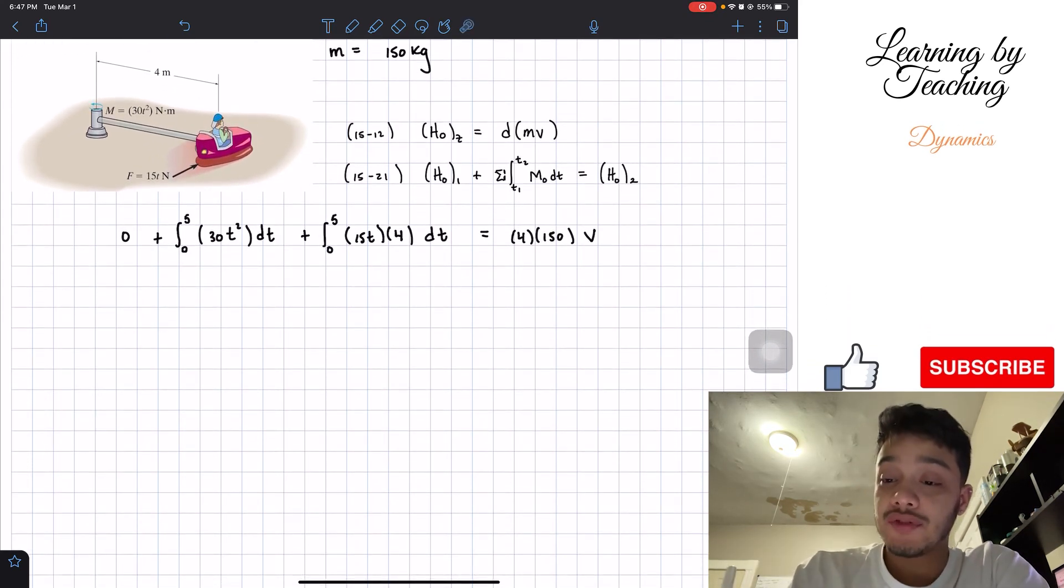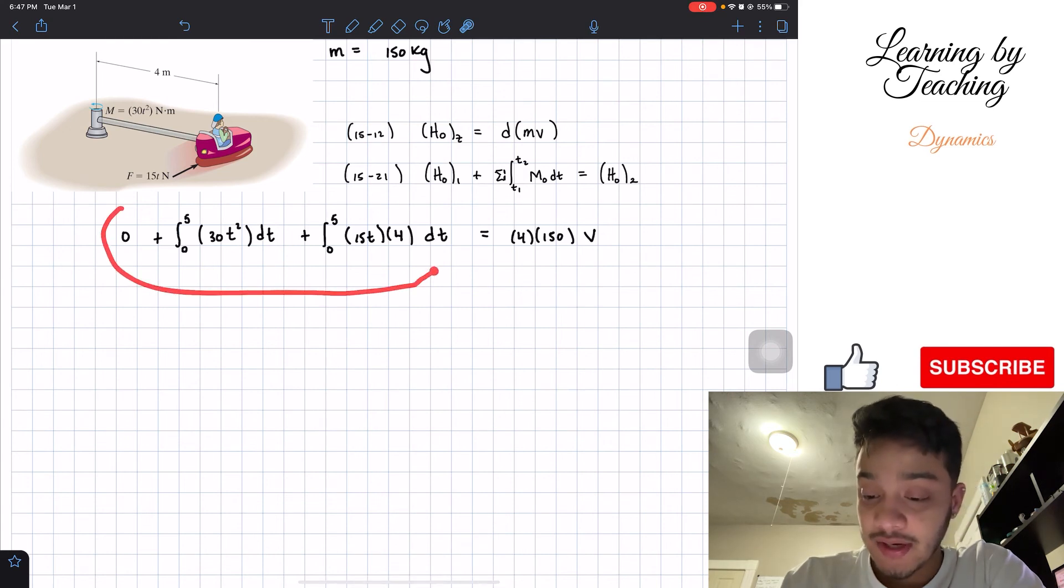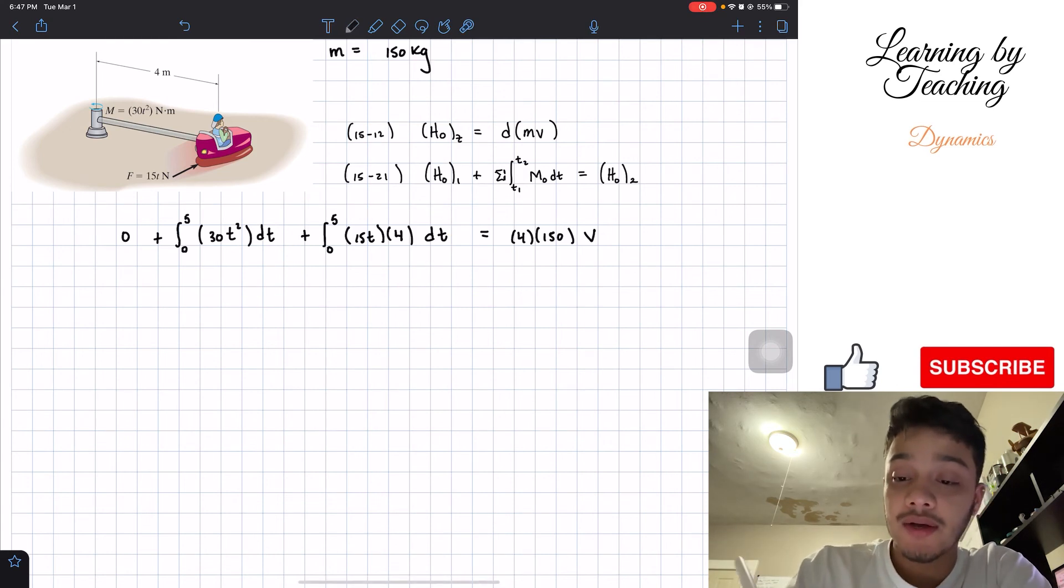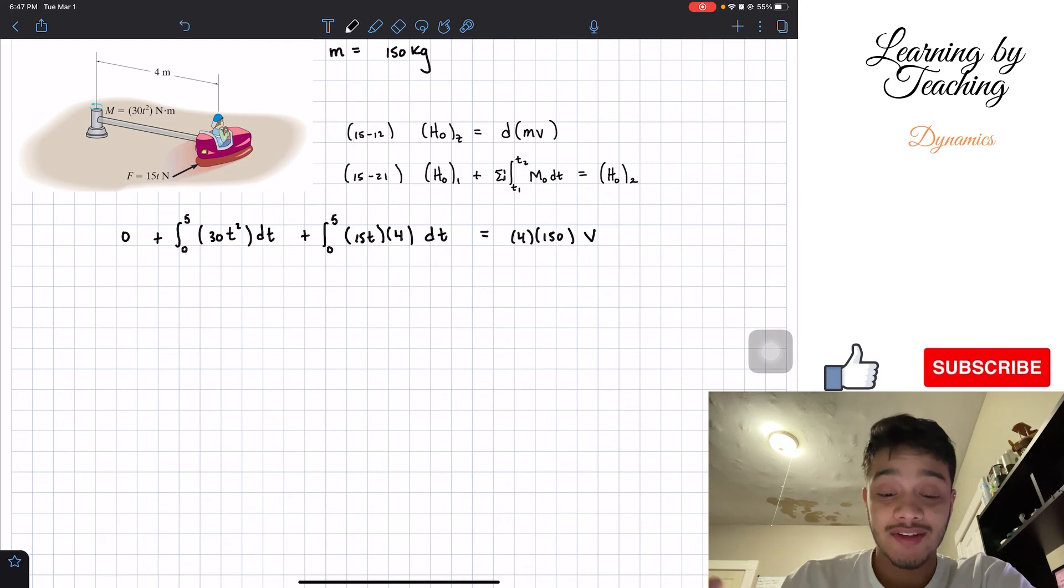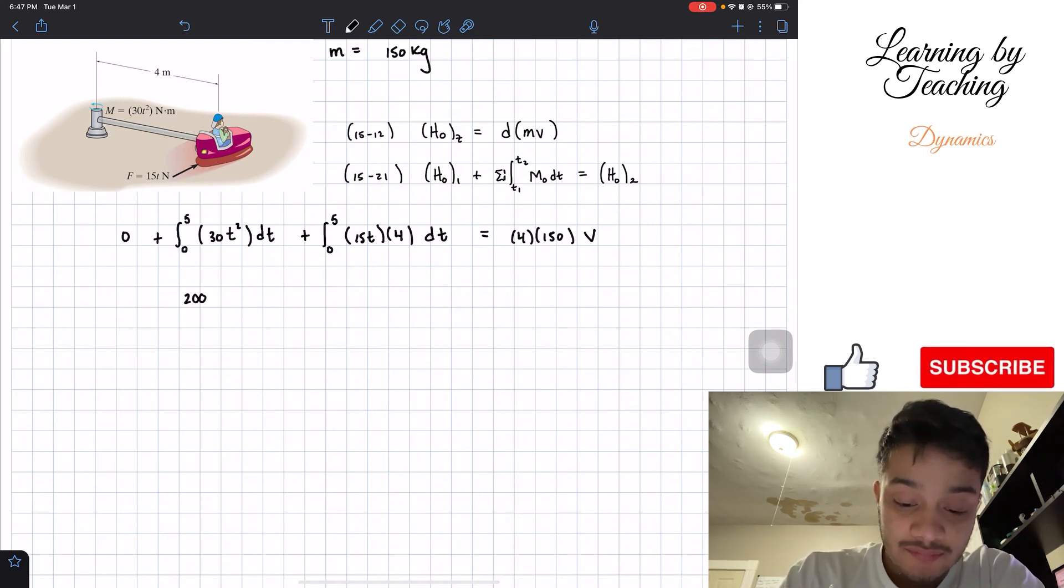I'm going to plug this into my calculator, all my left side. And surprisingly, it's just going to give me a total of 2,000, pretty nice number. And if I multiply 150 times four, it will give me a total of 600 times my velocity. Finally, if I solve for the velocity and I put it into my calculator, it will give me a total of 3.33 meters per second. And this should be our answer for this problem.